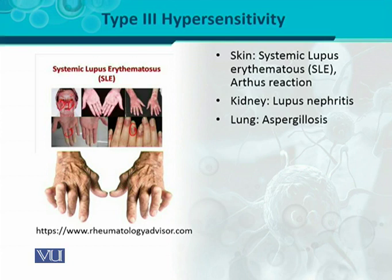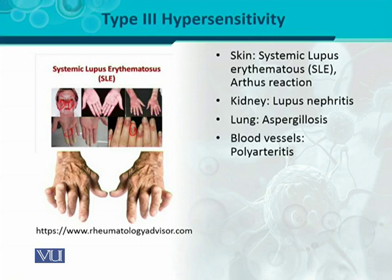In the lungs, aspergillosis can result. Aspergillus organisms are certain fungi; when they enter the body, antibodies develop against them and deposit on the surface of the lungs. When the immune complex deposits on lung tissue, it damages the tissue — this is an example of tissue-specific type 3 hypersensitivity. In blood vessels, if the immune complex deposits on the endothelial lining, it causes damage called polyarthritis, meaning many arteries become inflamed and damaged at different locations.